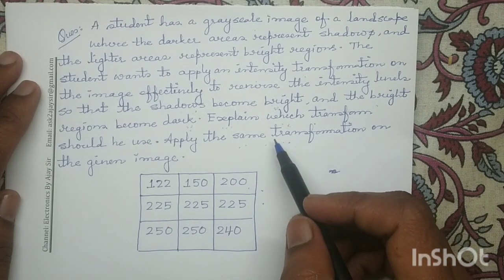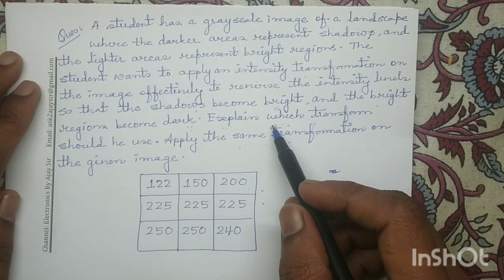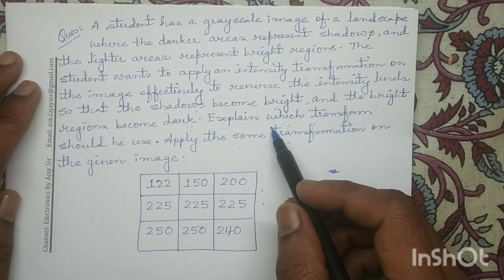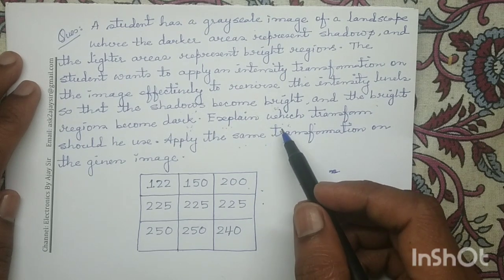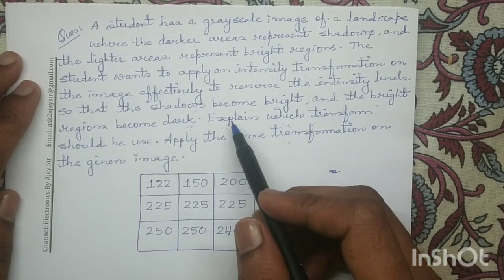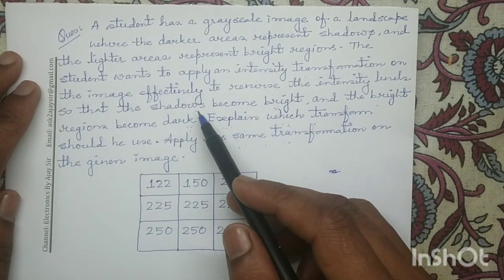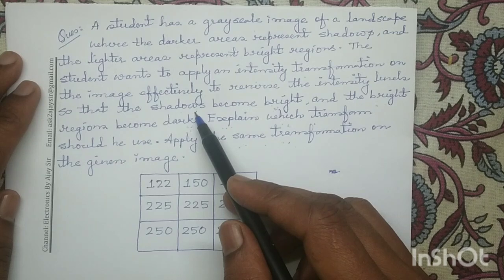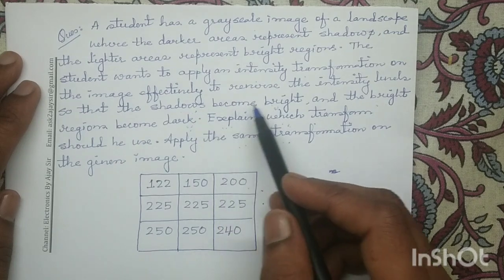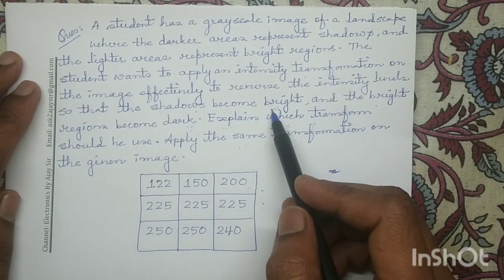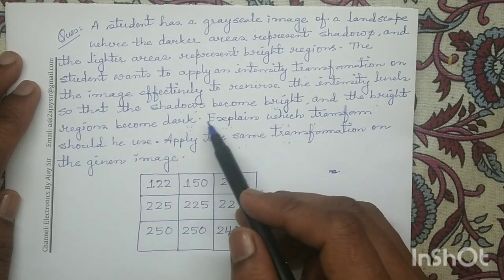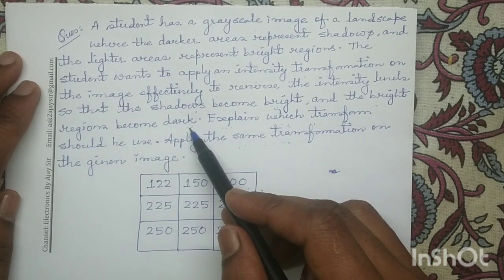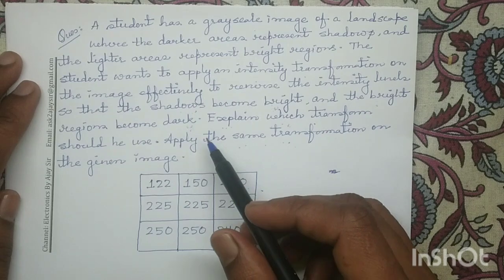For the first part, we will identify this intensity transformation operation. Converting a dark region into a bright region and a bright region into a dark region is called image negation.